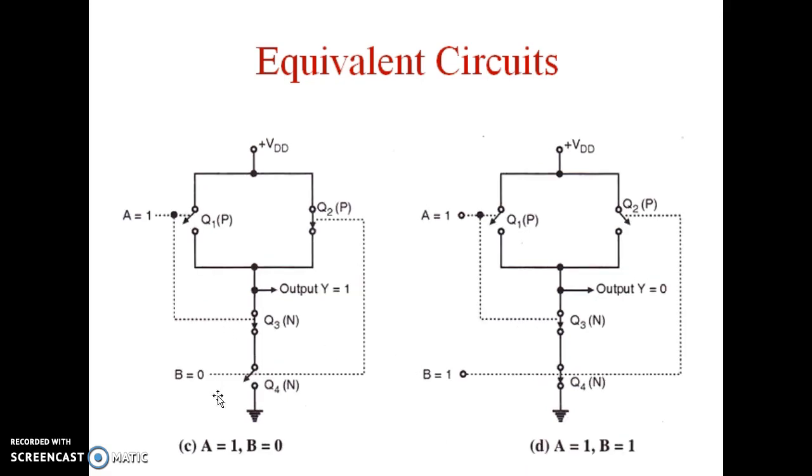For the third case, A equal to 1, B equal to 0, exactly reverse of the A equal to 0, B equal to 1 condition takes place, but the output remains Y equal to 1. And as A equal to 1 and B equal to 1, both PMOS are open switches, both NMOS are closed switches, so output is equal to 0.